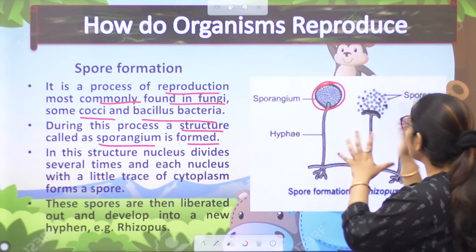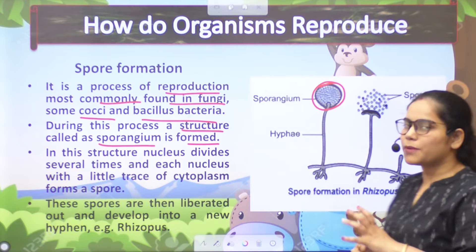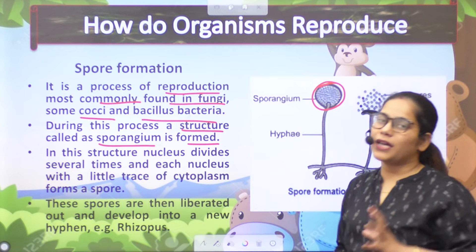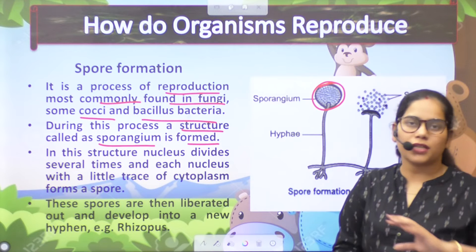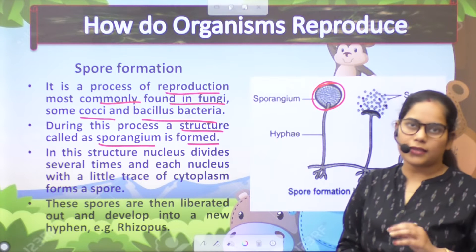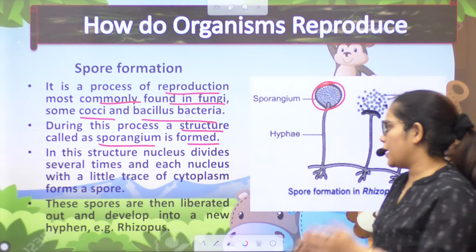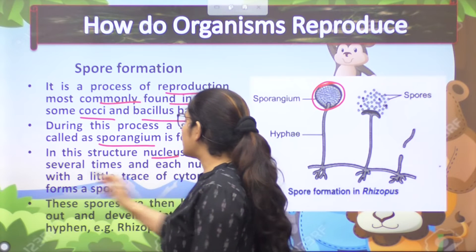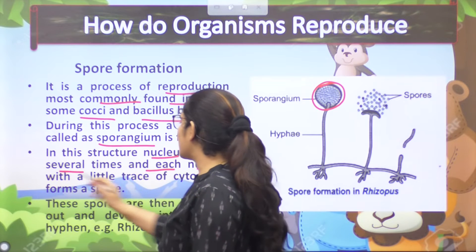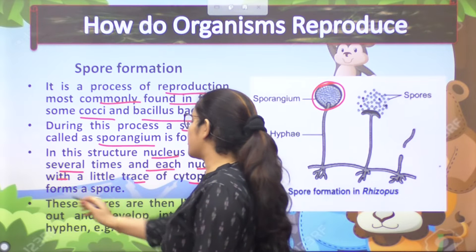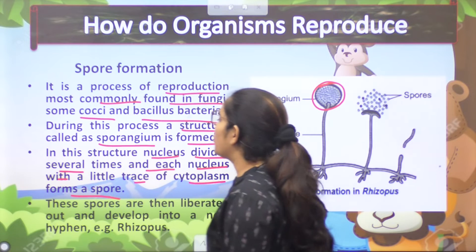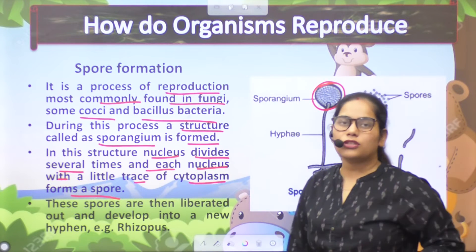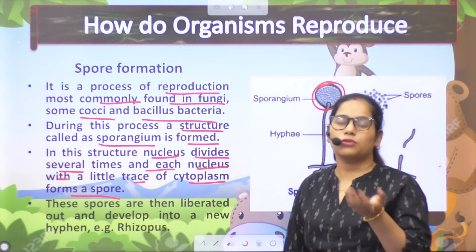And then there are several nuclei. The nucleus divides, and after dividing, each nucleus becomes a new cell — a new individual. In this structure, the nucleus divides several times, and each nucleus with a little portion of cytoplasm forms a spore. Here in the sporangium structure, the nucleus is formed and divides.